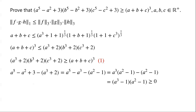If A ≠ 1 — and recall A > 0 — then both (A³ - 1) and (A² - 1) are either both greater than 0 or both less than 0. So their product is greater than 0. Therefore we have proved that A⁵ - A² + 3 ≥ A³ + 2.